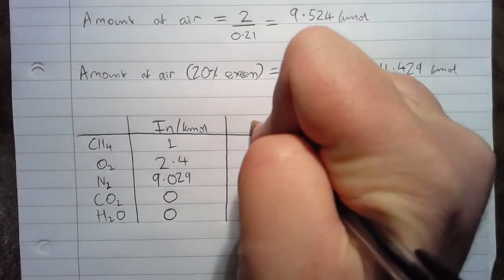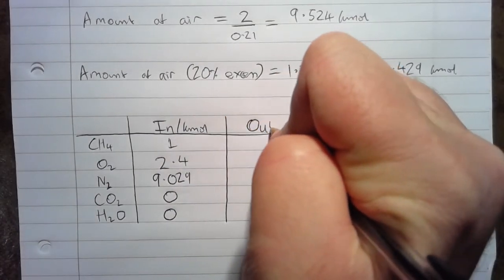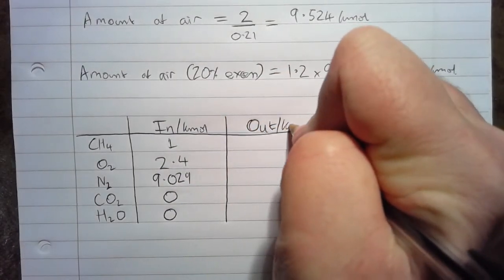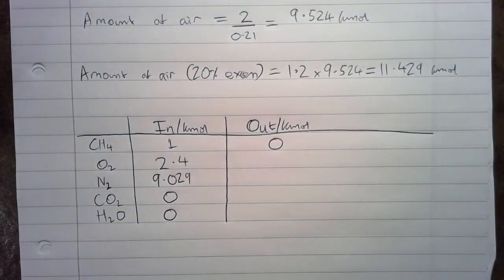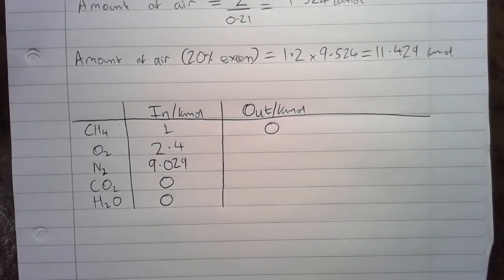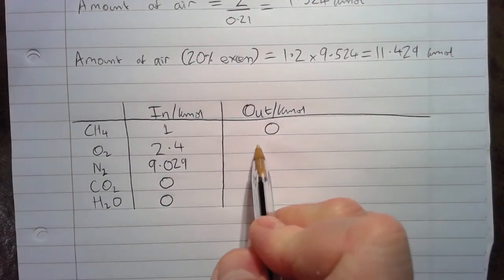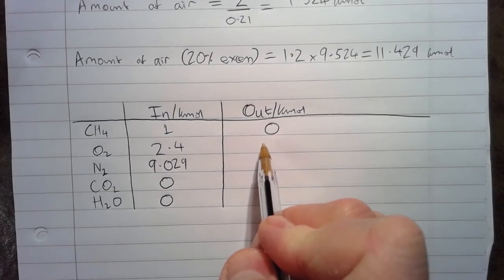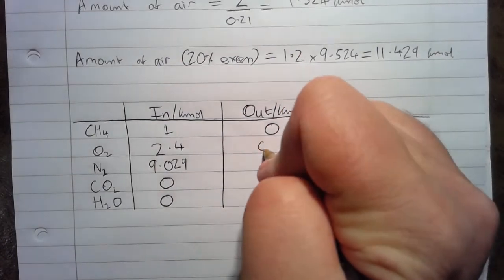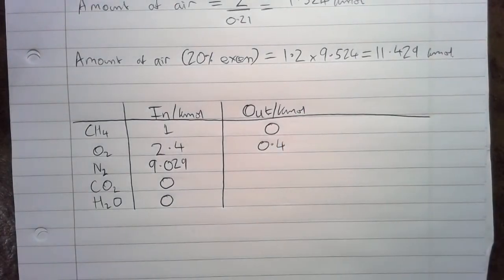Then we can move on to the outlet. In terms of what's coming out in kmoles, the CH4 is 0 because we've got complete combustion of that 1 kmole going in. The oxygen, from the stoichiometry of the combustion equation, we know that 2 kmoles are consumed, so we're left with 0.4 kmoles of oxygen coming out.